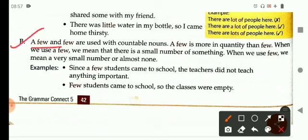A few and few are used with countable nouns. A few is more in quantity than few. When we use a few, we mean that there is a small number of something. And when we use few, we mean a very smaller number, almost none. Let's see an example.